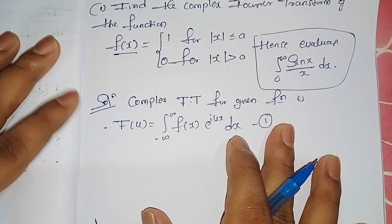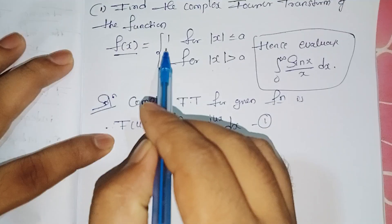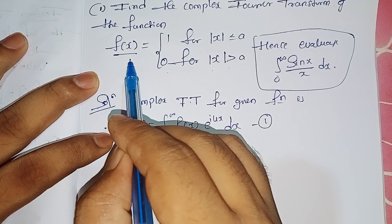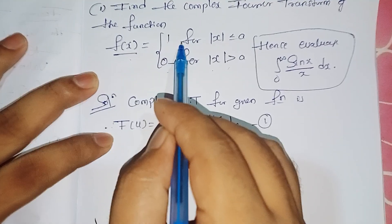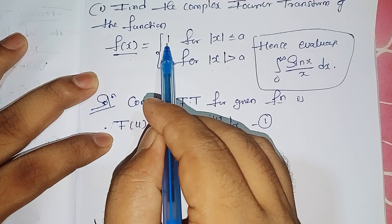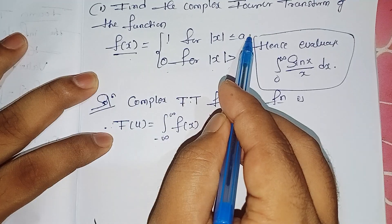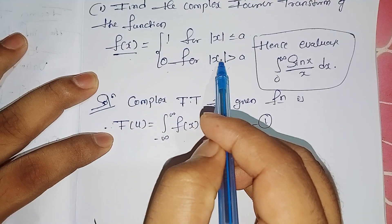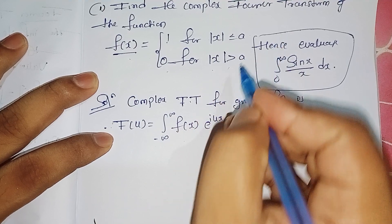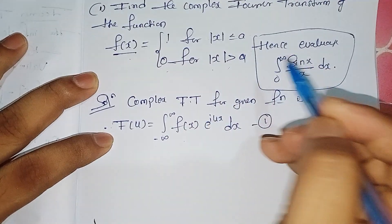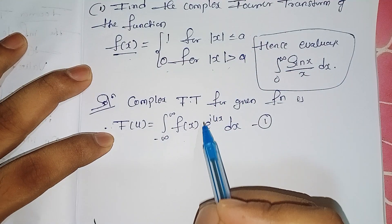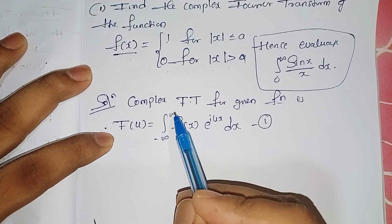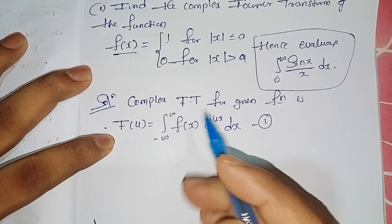The function f(x) is split into two parts: f(x) = 1 for |x| ≤ a, and f(x) = 0 for |x| > a. Now in place of f(x) we need to substitute accordingly, and for the limits from minus infinity to plus infinity we need to split them based on these intervals.